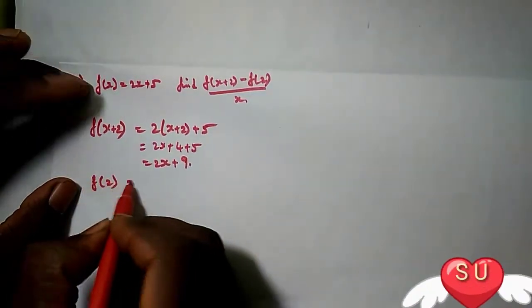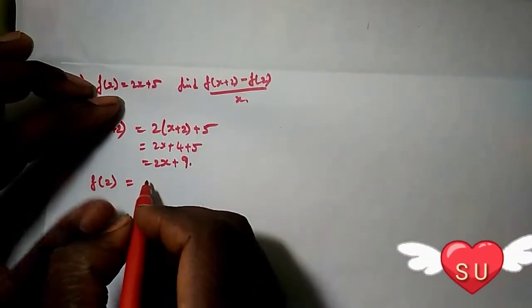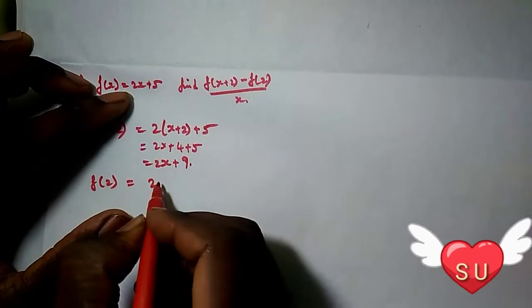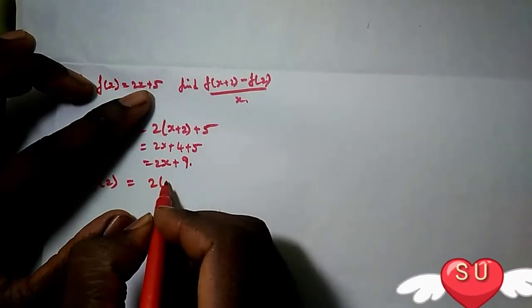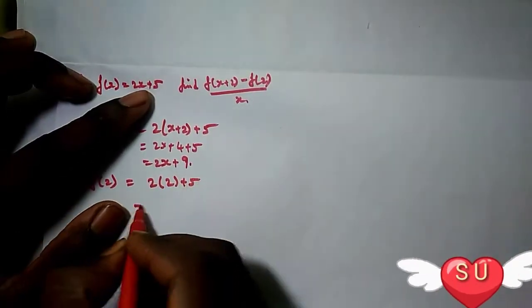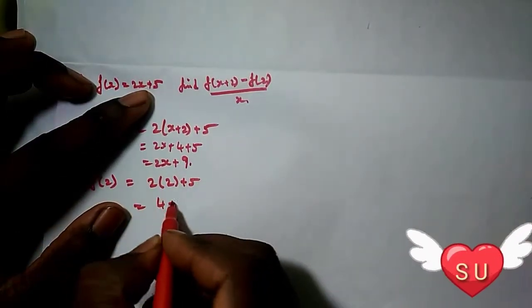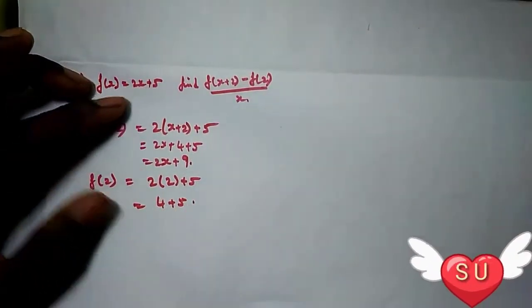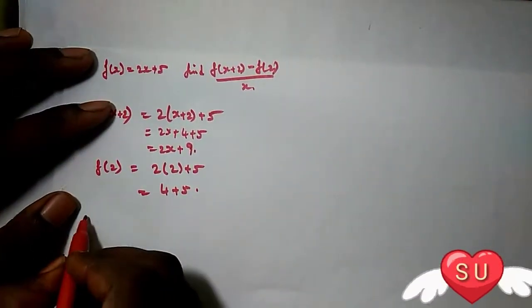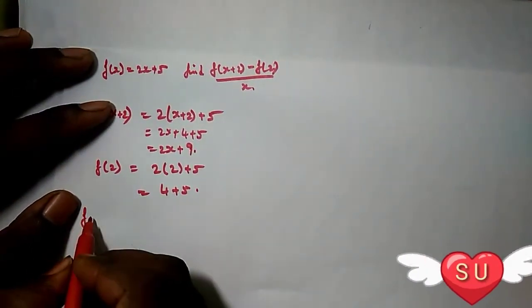Next, find f(2): substitute 2 into f(x), so f(2) = 2(2) + 5 = 4 + 5 = 9.